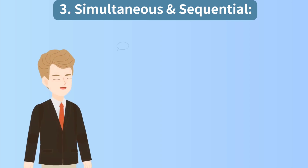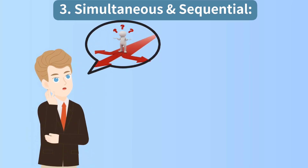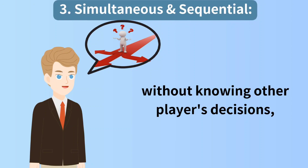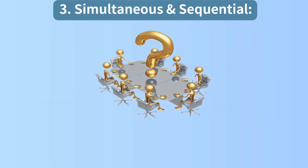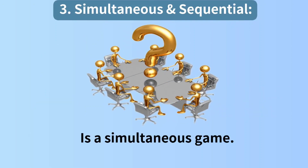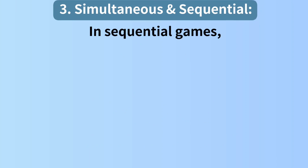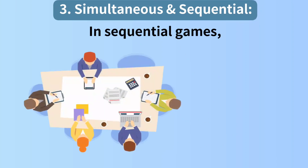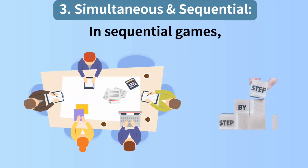Third, simultaneous and sequential. A game where players make a decision without knowing other players' decisions, or all players make their decision simultaneously, is a simultaneous game. In sequential games, players are aware of the other players' decisions, or they take turns to decide.